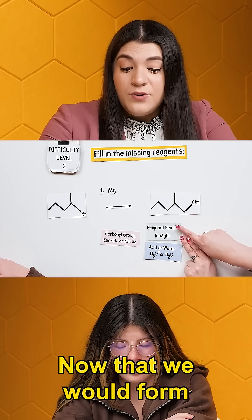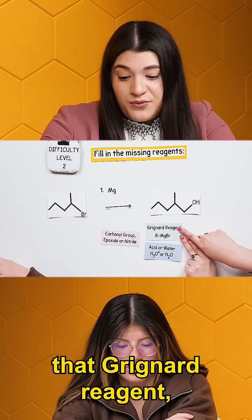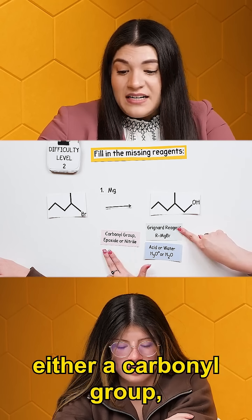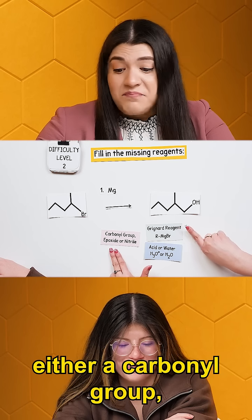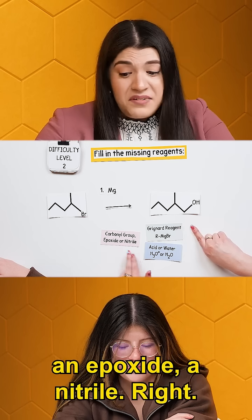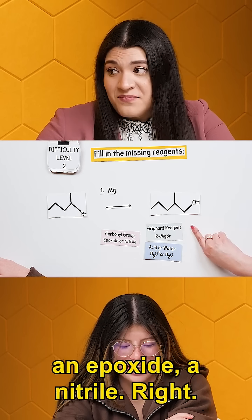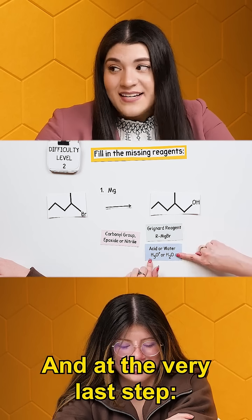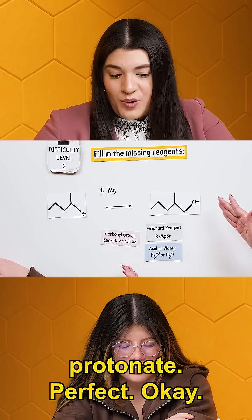Now that we would form that Grignard reagent, we need either a carbonyl group, an epoxide, or a nitrile. And at the very last step, protonate.